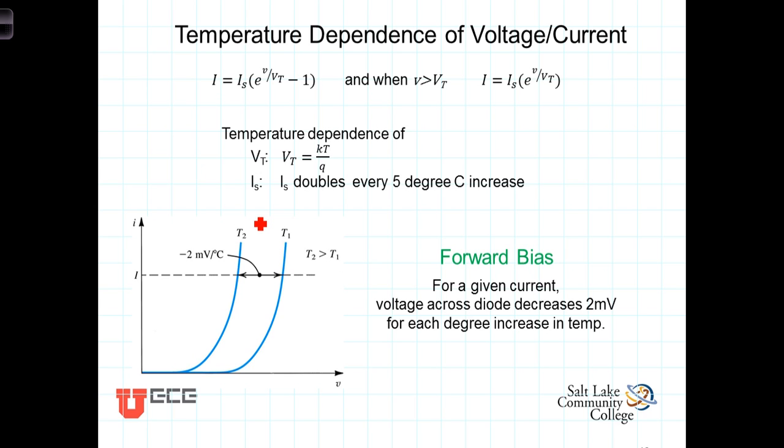So it turns out that for a forward biased diode, taking both of these temperature dependencies into account, leads us to a rule of thumb that for a given current, the voltage across the diode decreases about 2 millivolts for each degree of increase in the temperature.